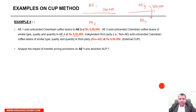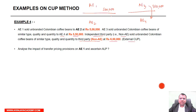An independent third party non-AE sold the same type of beans to another third party non-AE at rupees 6,00,000, which is the external CUP. Now there are three transactions in total.